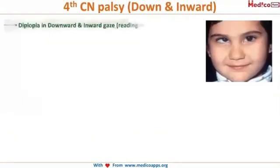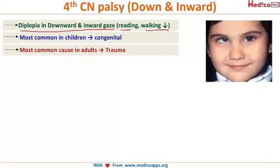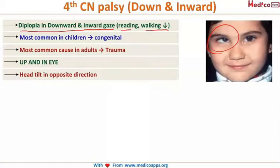In fourth cranial nerve palsy, the patient complains of diplopia in downward and inward gaze — such as when reading or walking downstairs. It is most commonly seen in children as a congenital condition. In adults it occurs due to trauma. The eye is in an 'in and up' position — opposite to third nerve palsy — and the head is tilted to the opposite side.